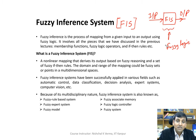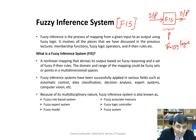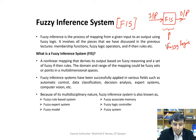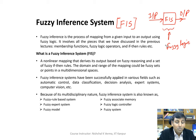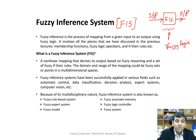A non-linear mapping by the FIS helps us derive its output based on fuzzy reasoning and a set of fuzzy if-then rules. The domain and range of the mapping could be fuzzy sets or points in a multidimensional space. Fuzzy inference systems have been successfully applied in multiple domains including modeling, control, computer vision, automation, data mining, and machine learning.